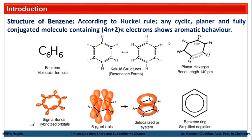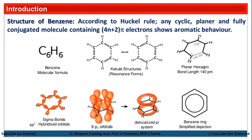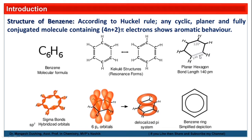In benzene, all the carbons are sp2 hybridized. The geometry of sp2 hybridization is planar, so benzene has planar geometry. The bond angle is 120°, and the carbon-carbon bond length is 1.39 Angstroms.